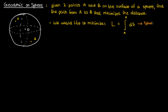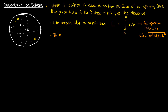The length element ds can again be described using the Pythagorean theorem, but this time there's a dz squared in the expression because when we're traversing along a sphere we're technically moving in three dimensions in Cartesian space. Since we're moving along a sphere, we need to write everything in terms of spherical coordinates.